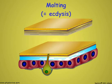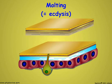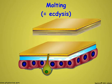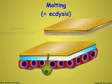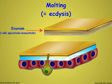Molting, which is properly called ecdysis, occurs when the old exocuticle and epicuticle are sloughed off. The shed cuticle is called the exuvium.